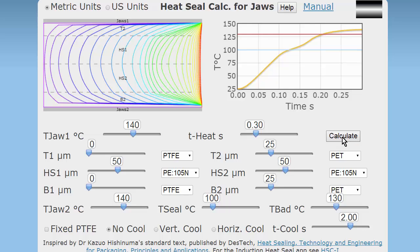And when we hit the calculate button, we get these two graphs. The first one is showing the temperature at the heat seal interface, so between HS1 and HS2, with time. So we've given it a total time in this simulation of 0.3 of a second. And in that 0.3 of a second, it's gone from 25 degrees right up to about 138, 139 degrees.